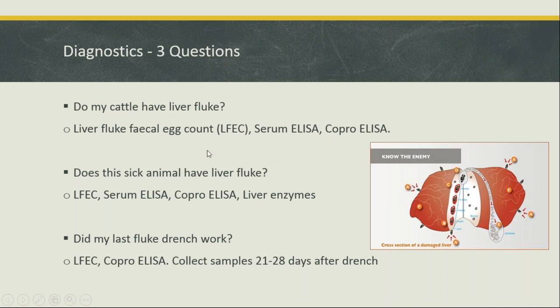The second question is: is an animal clinically ill from liver fluke? Here you can use a liver fluke faecal egg count, serum ELISA, or coproantigen ELISA, and if a vet is present, you can also test liver enzymes such as GGT. These are an indirect way of detecting liver damage rather than fluke directly. The third crucial question is: did my last fluke drench work? For this, only the faecal egg count or the coproantigen ELISA are suitable.